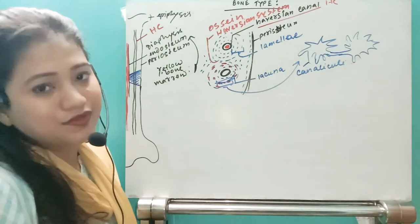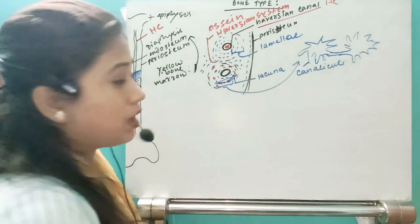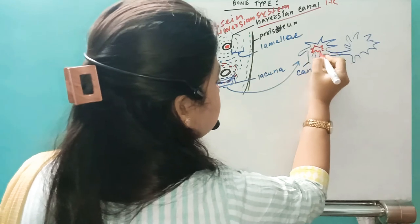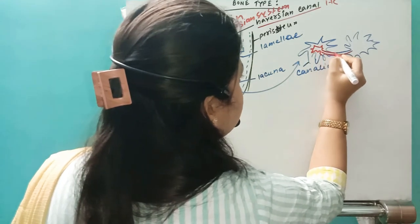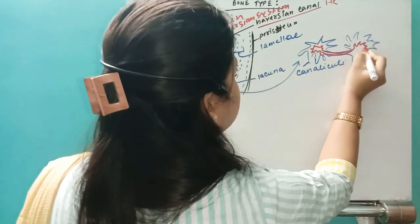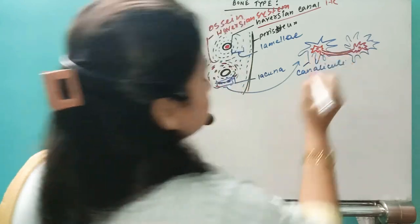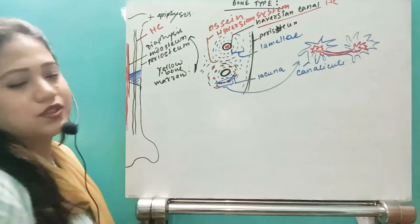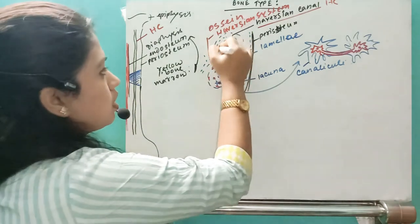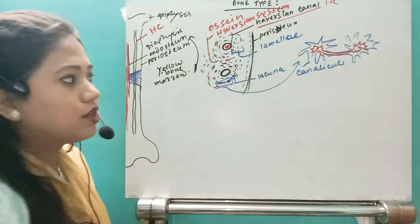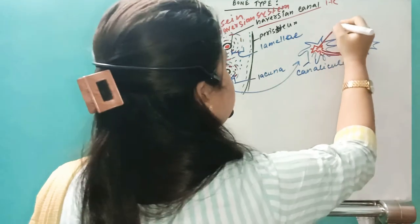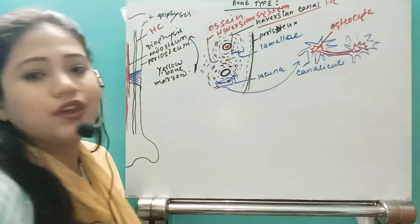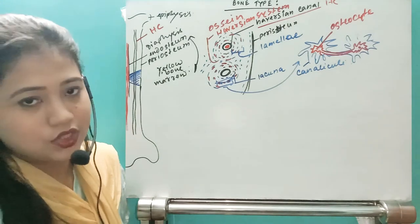Osteocytes also have some projections. Suppose this is one osteocyte — it will have a connection with the next osteocyte. So osteocytes are present throughout the bone and they also have cytoplasmic projections connecting one osteocyte with the next.